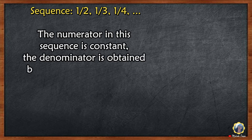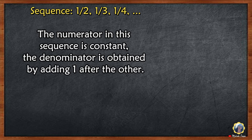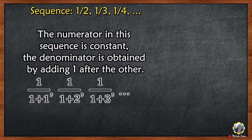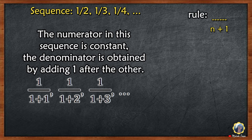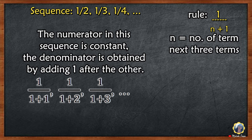Another example: sequence 1/2, 1/3, 1/4, and so on. The numerator in this sequence is constant. The denominator is obtained by adding 1 each time: 1 over (1+1) equals 1/2, 1 over (1+2) equals 1/3, 1 over (1+3) equals 1/4. Rule: 1 over (n+1). N is the number of term.